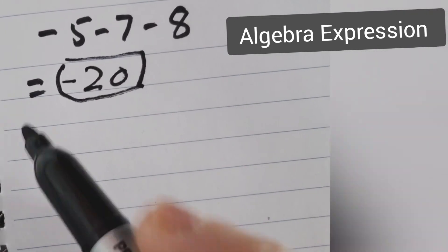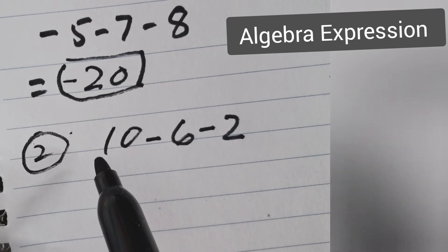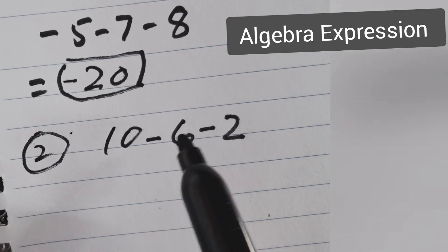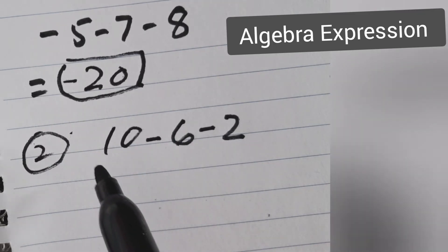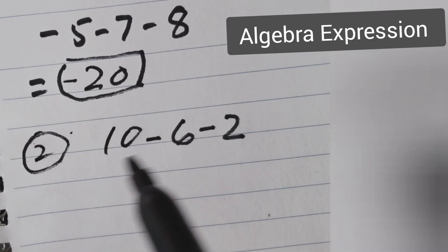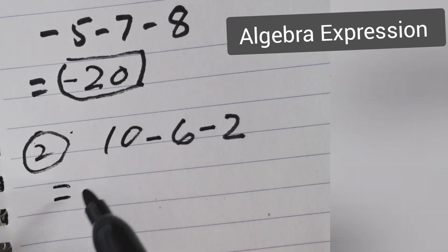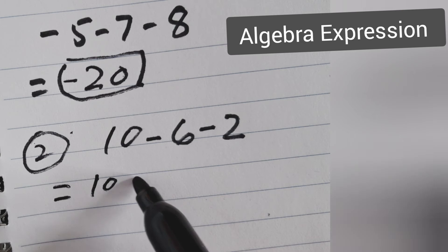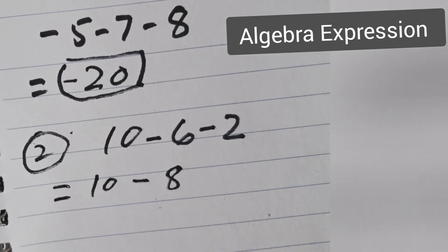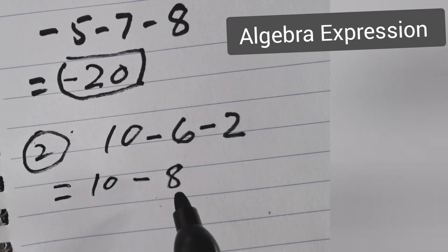Second question: we have no sign. If no sign, it means positive 10. Positive 10, negative 6, negative 2. When there are different signs, negative and positive, then we add negative together and positive together. So we have 10 positive, minus 6 plus 2, and 8 negative. Now we subtract from the larger number.